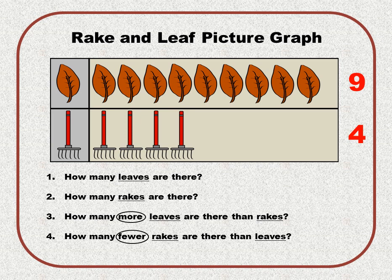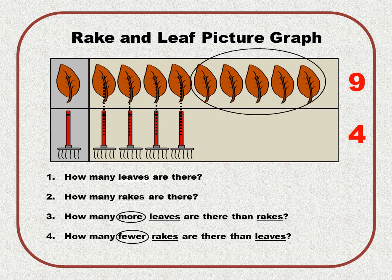Question number three says: how many more leaves are there than rakes? We'll match them up — leaf to rake, leaf to rake, leaf to rake, leaf to rake — and circle the extra leaves. If you still can't figure it out, ask yourself: how many more rakes would I need for them to be equal? You can see you'd need five more, so there are five more leaves than rakes.